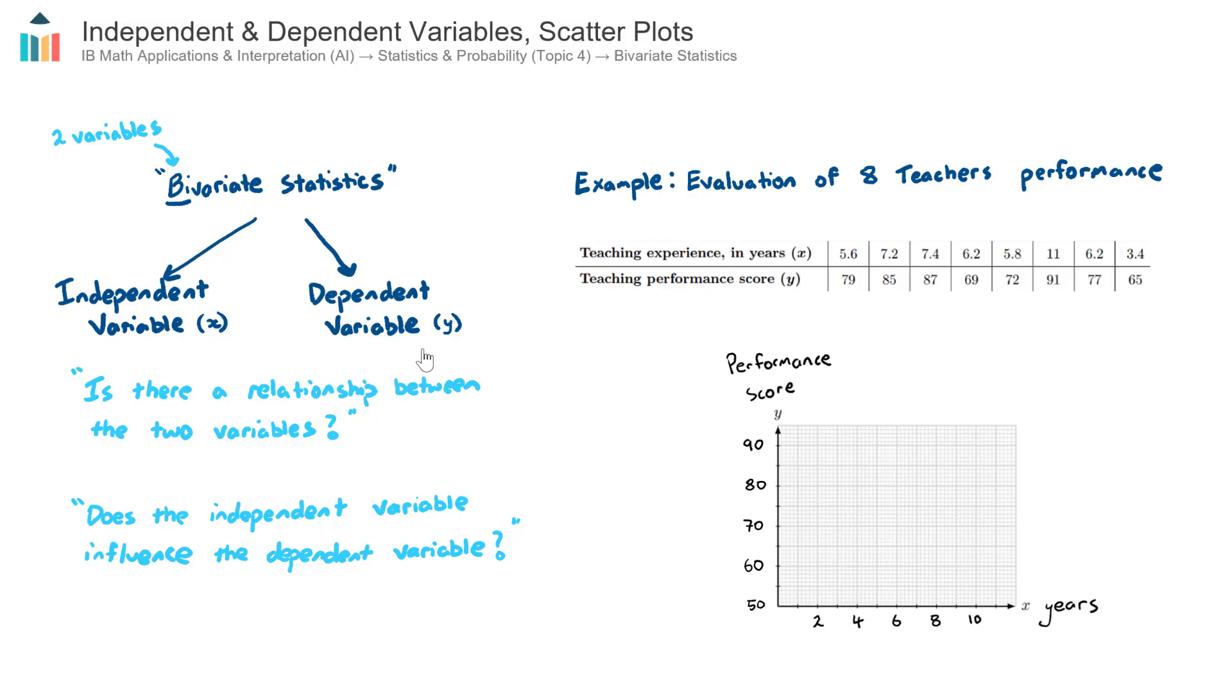The questions that you should be posing to yourself whenever you encounter a question like this is: is there a relationship between the two variables? Or another way to think about it is, does the independent variable or the input variable influence the dependent variable? A classic example of this is the height of a growing child. Does this child's height, is it influenced by their age? That's a very common example, because clearly it is. As a child gets older, their height increases, so their height is influenced by their age.